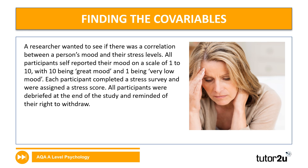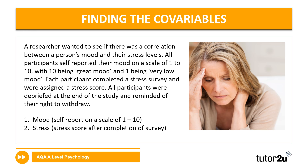Let's take a look at another one. A researcher wanted to see if there was a correlation between a person's mood and their stress levels. All participants self-reported their mood on a scale of 1 to 10, with 10 being great mood and 1 being very low mood. Each participant completed a stress survey and were assigned a stress score. The co-variables are mood — their self-report on a scale of 1 to 10 — and stress — their stress score after completion of the survey.